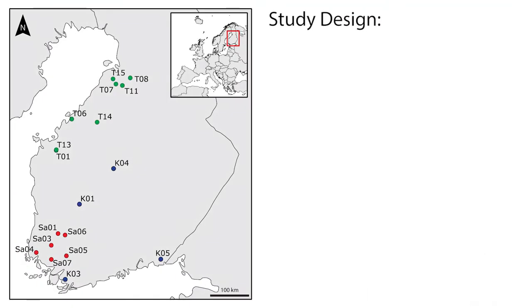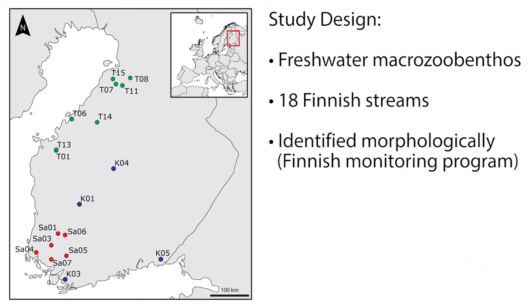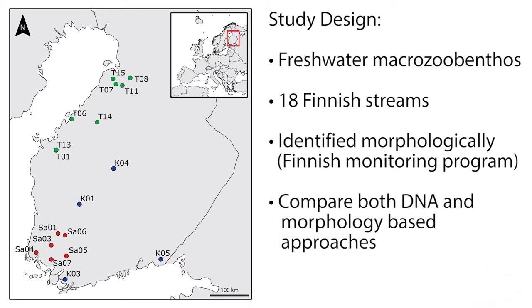In this study, we investigated 18 macrozoobenthos kick samples from Finnish streams. The samples were collected as part of the official Finnish stream monitoring program, and all specimens were identified based on morphology by an experienced taxonomist. We then took those monitoring samples and tried to identify the taxa present using DNA metabarcoding, with the goal of identifying potential weaknesses and advantages of DNA metabarcoding for routine monitoring and water quality assessment.